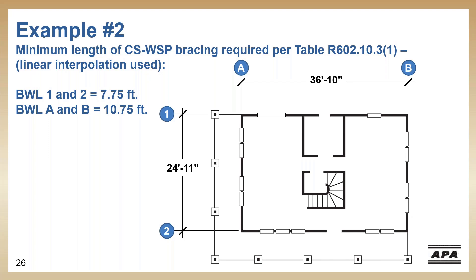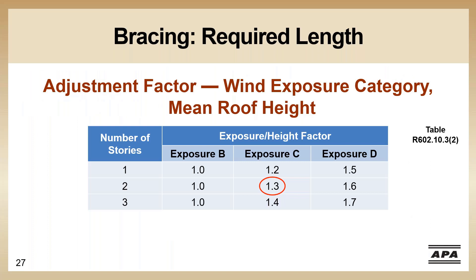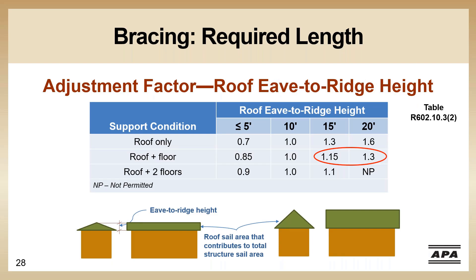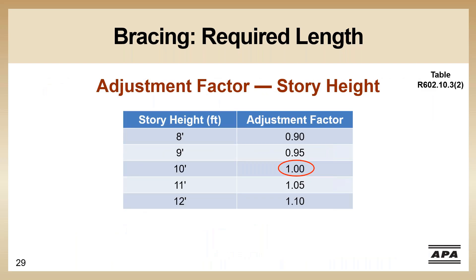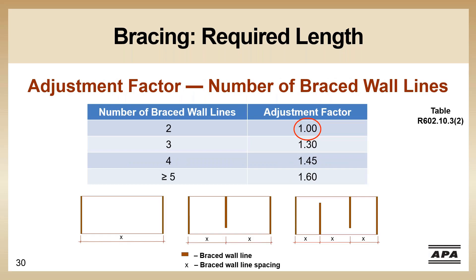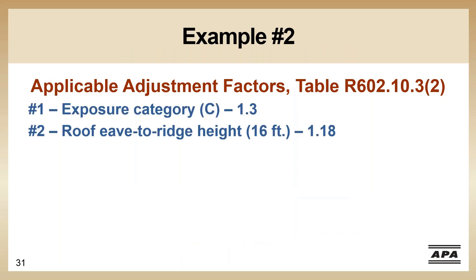Taking these numbers to our adjustment step: we're a two-story, exposure C, so we multiply by 1.3. For roof eave to ridge height, even though it's the same 16 feet, we're now looking at a roof plus a floor, so we interpolate between 1.15 and 1.3 and come up with 1.18. Our story height is 10 feet, so no adjustment needed. The number of brace wall lines is two, so no adjustment there either. On the first level we have just two adjustments: exposure C at 1.3 and roof eave to ridge at 1.18.